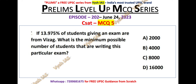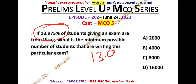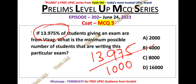Now let's solve MCQ number 5. If 13.975% of students giving an exam are from WISAC, what is the minimum possible number of students writing this exam? The key is to simplify this fraction. Since the number of students cannot be in decimal form, we express 13.975% as 13.975/100.